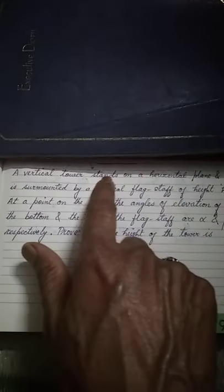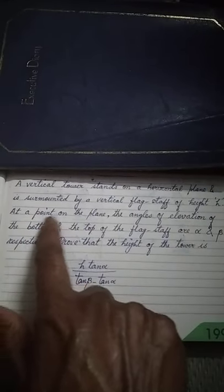A vertical tower stands on a horizontal plane and is surmounted by a vertical flagstaff of height h. At a point on the plane,